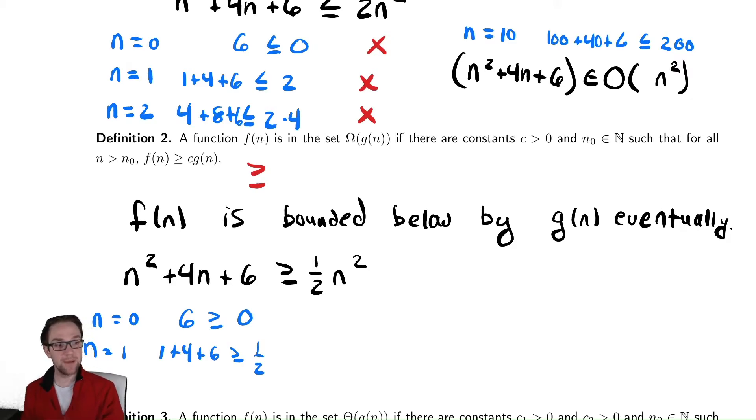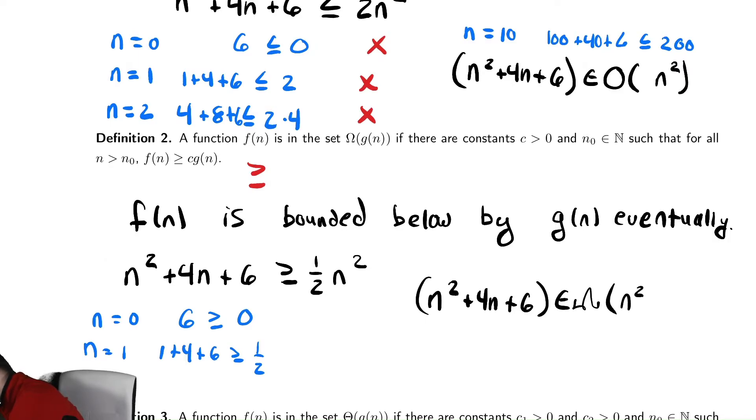So, the claim we're going to make here, just like before, is that that function, n² + 4n + 6, is in a set big omega of n². Again, we get to ignore the one half. We are allowing ourselves to absorb that constant into what we define, and it happens eventually. In this case, eventually was n = 0. However, it could theoretically be a larger value like it was in the previous one, where we didn't show that our thing was true until n = 10. So, that is the value that we choose for that n₀ for eventually.